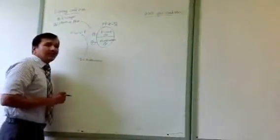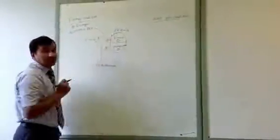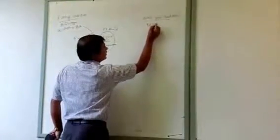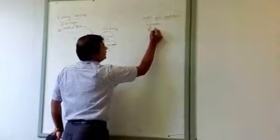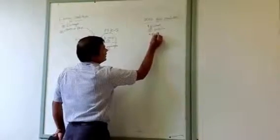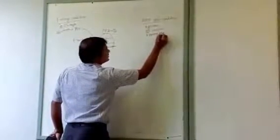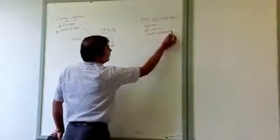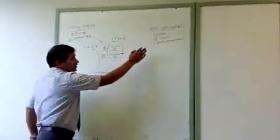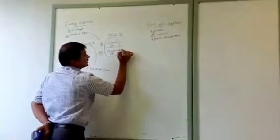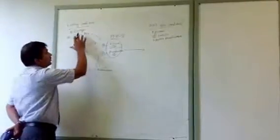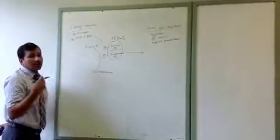In well-fed condition, there is an increase in glucose, which leads to increased insulin. Insulin activates protein phosphatase enzyme. This protein phosphatase acts on PFK2 and removes the phosphates that were added during fasting by protein kinase A under glucagon influence.